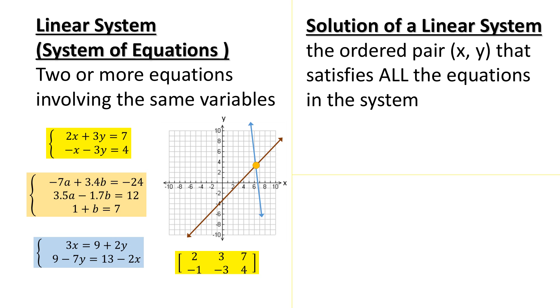The solution of a linear system is the ordered pair (x, y) that satisfies all the equations in the system. The intersection of two lines would be a solution of this system. And when you have variables that are not x and y, just write them in alphabetical order.